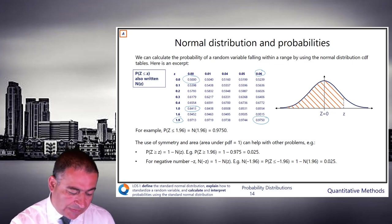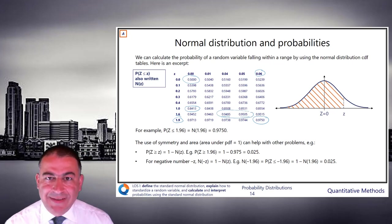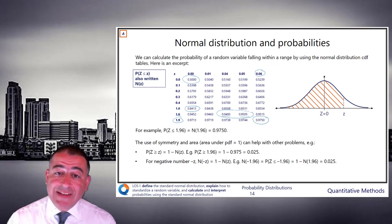1.64 and 1.65. It's halfway between those two. And hopefully, you can see that that is 0.95. So that's how we deal with this.